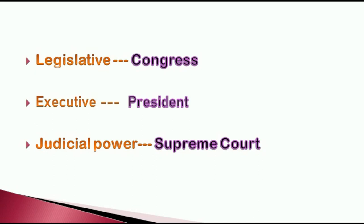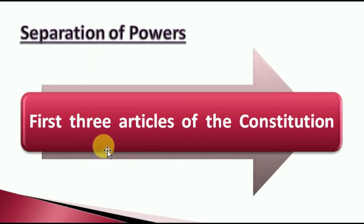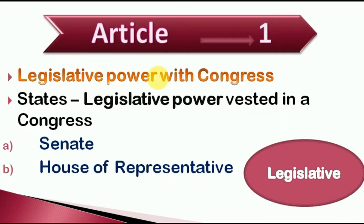In the US, the government's three organs are Congress, the Executive or President, and the Judiciary or Supreme Court. Article 1 of the US Constitution says that the legislative power — the law-making power — belongs to Congress. Congress is the name of the US Parliament, and it has two houses: the Senate and the House of Representatives. These two houses have the legislative power.